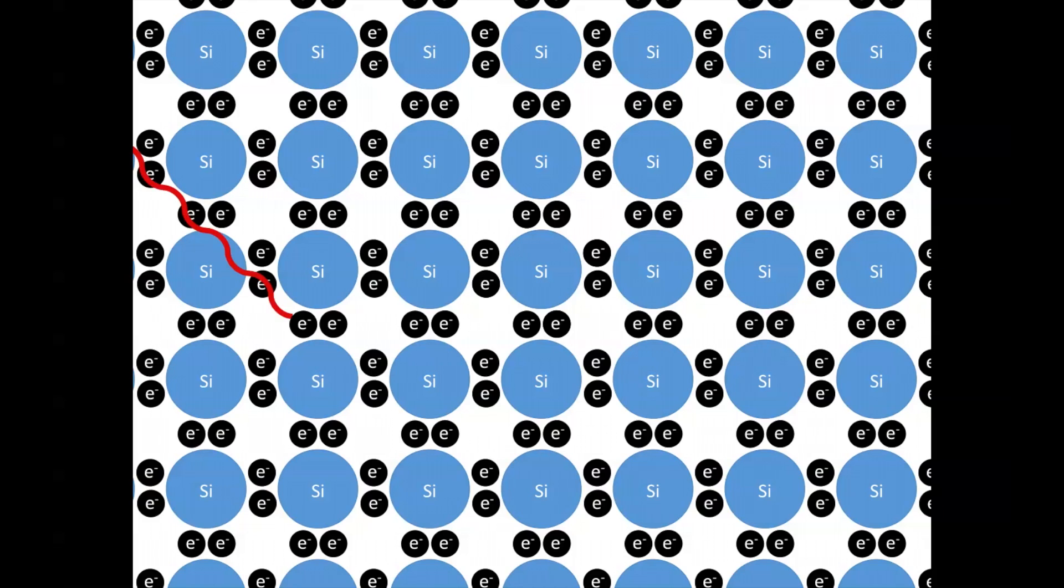When light hits our sample, photons of sufficient energy can break these covalent bonds, ejecting the formerly immobile electron, giving enough energy to move around. The mobile electron leaves behind a mobile hole, which can move through the crystal by swapping positions with neighboring covalently bonded electrons. This explains why light increases the conductivity of our sample.